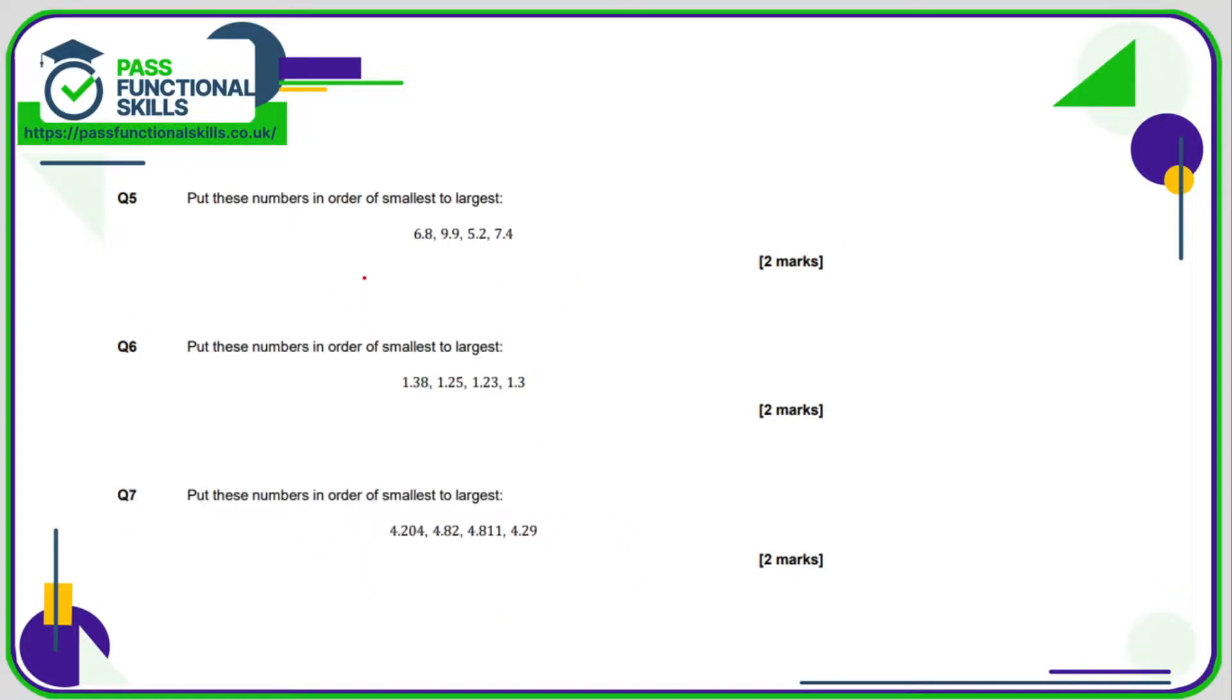Question 5, we need to put these in order smallest to largest. So this one is fairly simple since we can put them in order just from the value of the units column. We've got a 6, a 9, a 5 and a 7. Well the smallest of those numbers is a 5, so 5.2 is going to be first. 6 is the next smallest so 6.8, then 7.4, then 9.9.